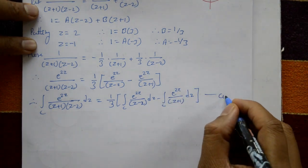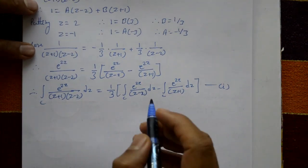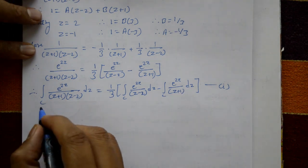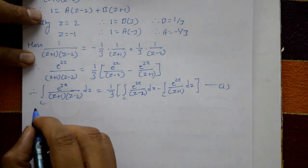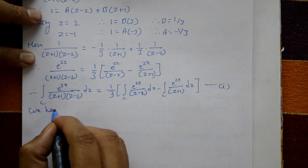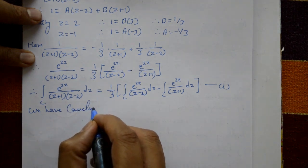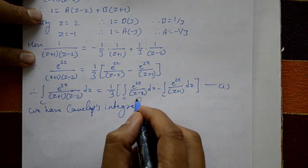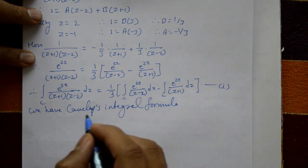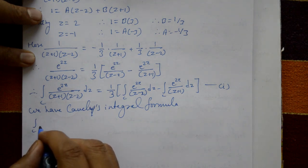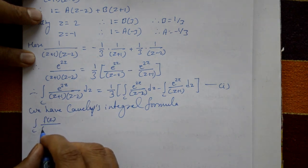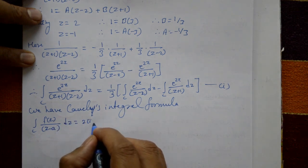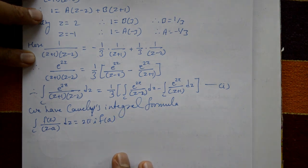Both z = 2 and z = -1 are inside the circle. Using Cauchy's integral formula: the integral of C of f(z)/(z-a) dz equals 2πi times f(a).